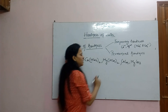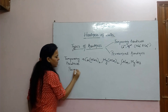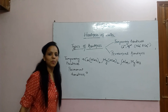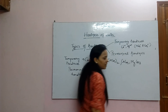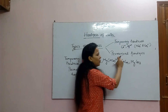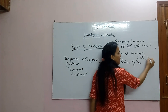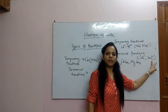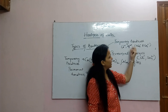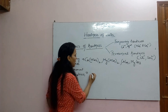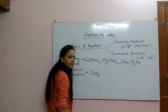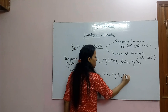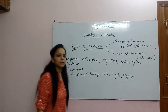Permanent hardness of water is due to the presence of chloride and sulfate ions of calcium and magnesium. For example: calcium chloride, calcium sulfate, magnesium chloride, and magnesium sulfate — ये सब permanent hardness के salts हैं।